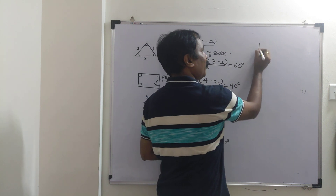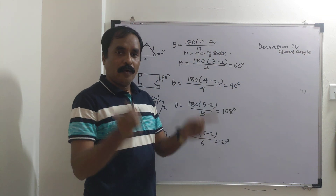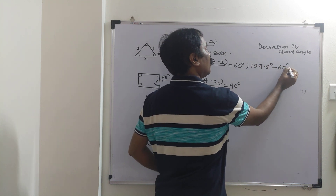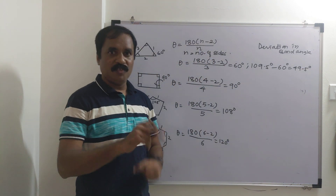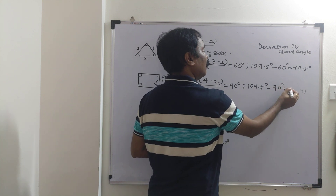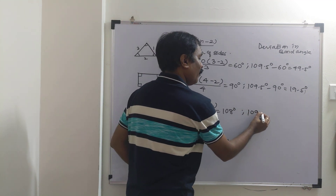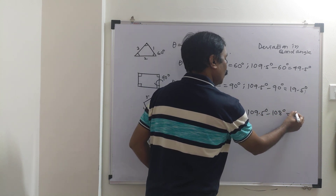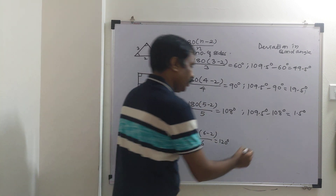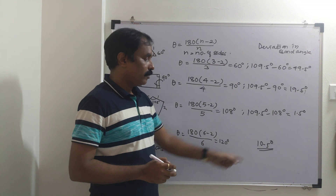Now let's calculate the total deviation for each ring. For cyclopropane: 109.5 minus 60 degrees gives about 49.5 degrees deviation — much more. For cyclobutane: 109.5 minus 90 degrees is also a large deviation. For cyclopentane: 109.5 minus 108 degrees is only 1.5 degrees. For cyclohexane: 120 minus 109.5 degrees gives about 10.5 degrees deviation.